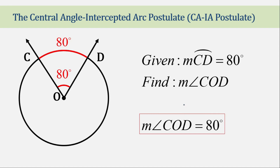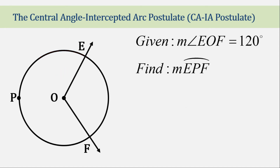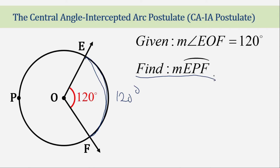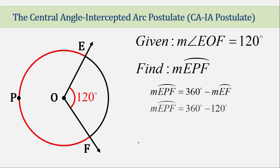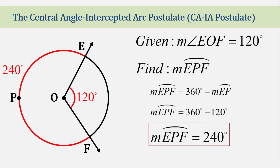Now let's give a twist on this kind of problem. If we have angle EOF which is 120 degrees, we know by the CAIA postulate that the intercepted arc EF is also 120 degrees. But we are asked to find the measure of the major arc EF at the back of the central angle. Since the circle measures 360 degrees, we subtract 120 from 360 and get 240 degrees as the measure of the major arc EF.